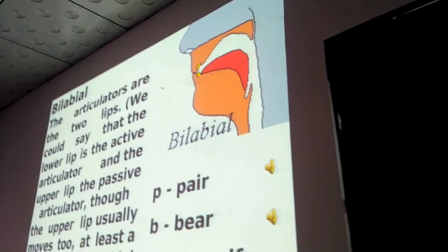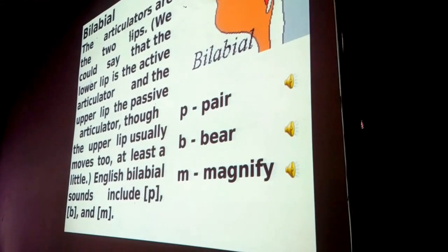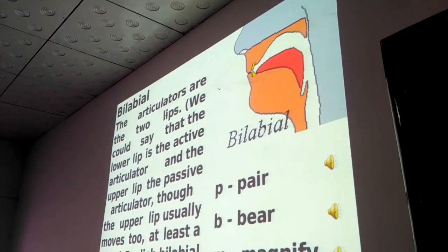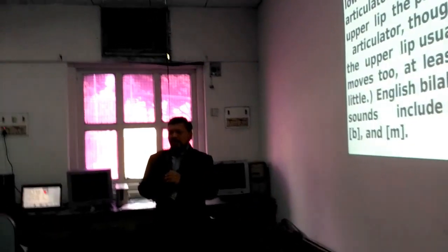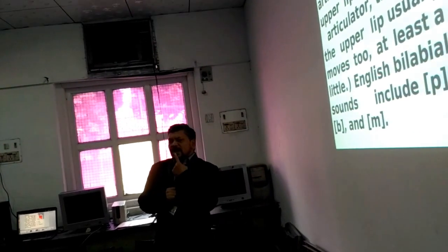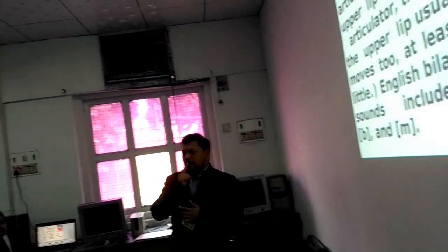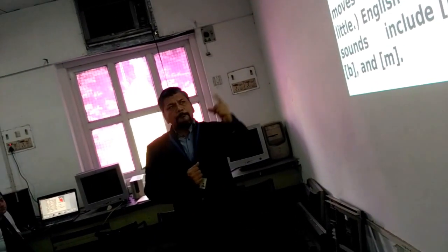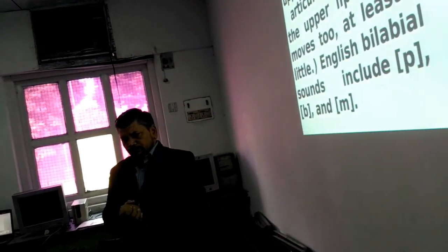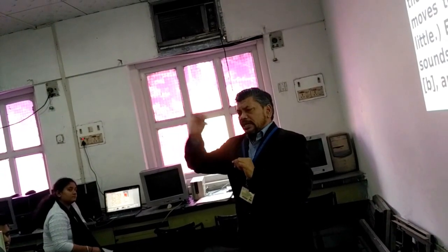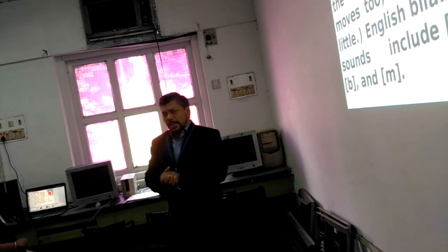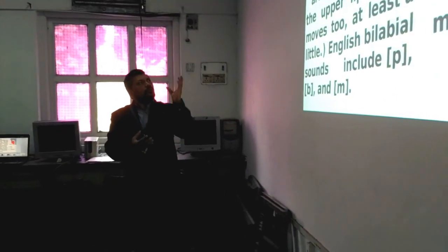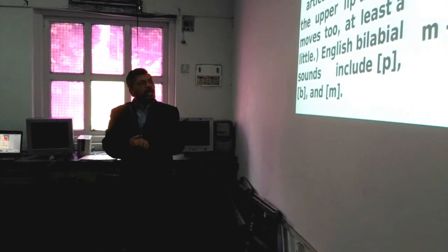First categorization for consonant sound in IPA is bilabial, and the articulators are two lips. This sound is produced with the help of two lips, where the lower lip is the active articulator and the upper lip is the passive articulator. Bilabial sounds include P, B, and M.